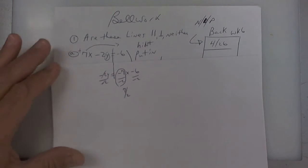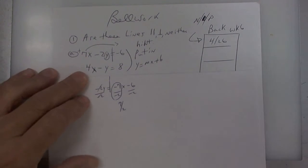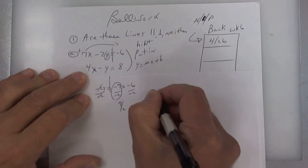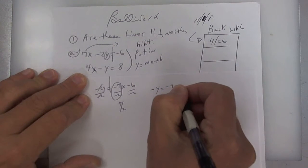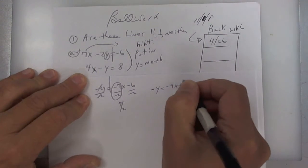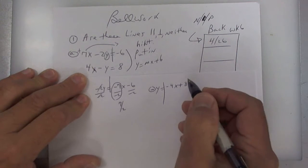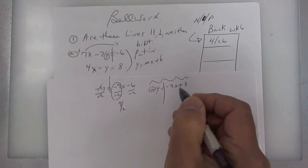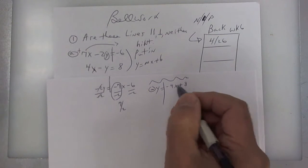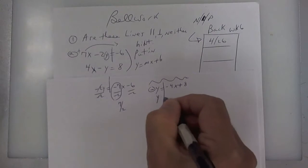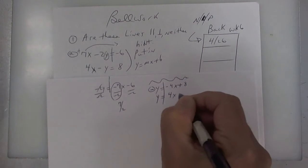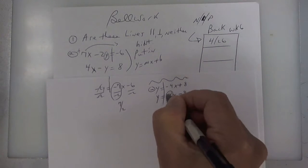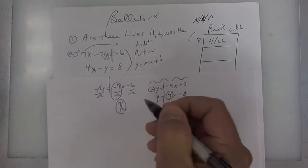Two negatives make a positive. On the next one, you're going to take the 4x and move it to the other side, so you get negative 4x plus 8. Then you're going to change all your signs — draw that little squiggly to let you know to change everything. Here your slope is 4, and here your slope is that, so it's neither.